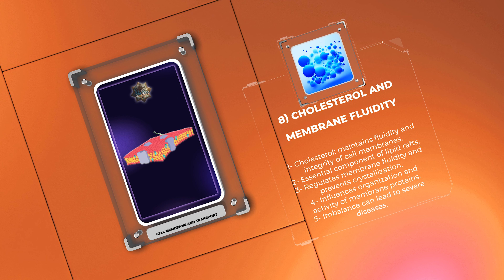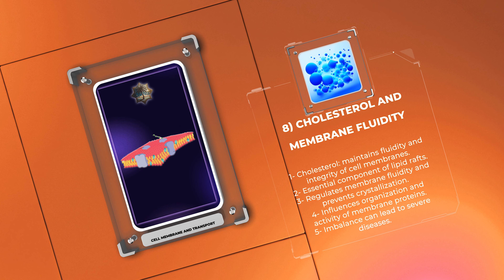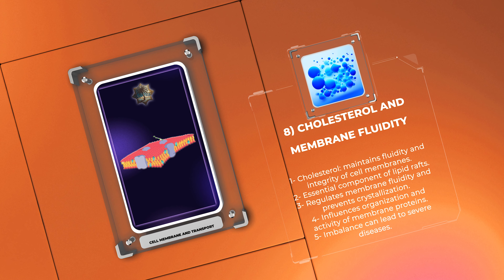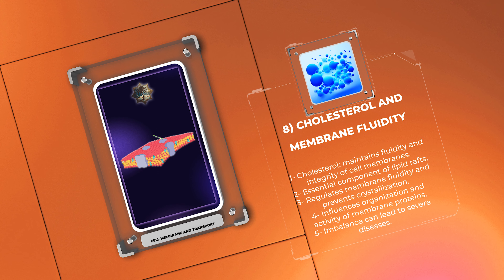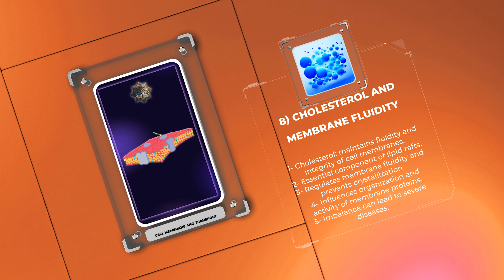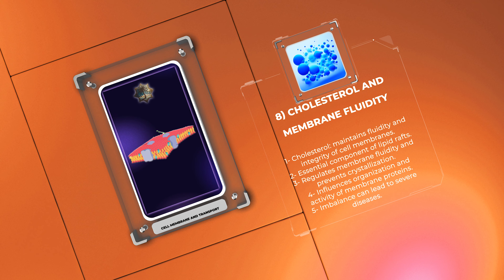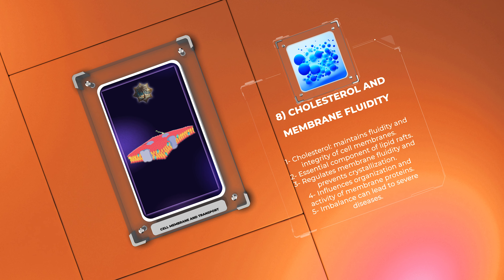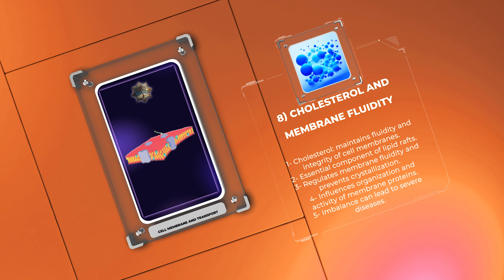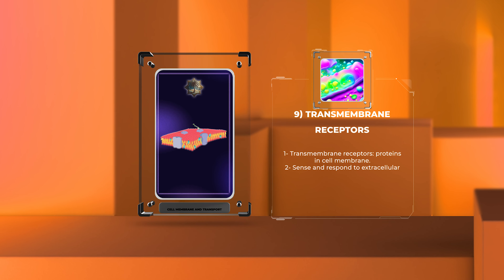Cholesterol is an essential component of lipid rafts and influences the physical properties of cell membranes. It helps regulate membrane fluidity, prevents membrane crystallization, and influences the organization and activity of membrane proteins. Its balance is crucial for cellular functions, and disturbances in cholesterol homeostasis can lead to severe diseases such as atherosclerosis.